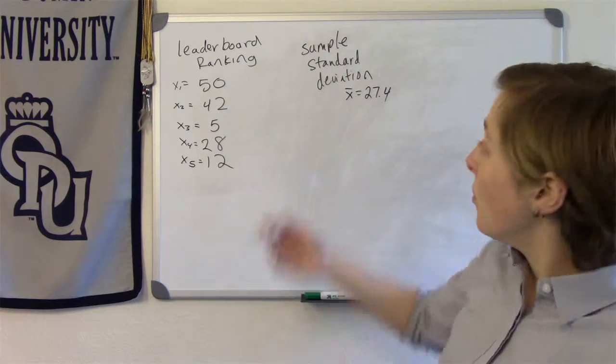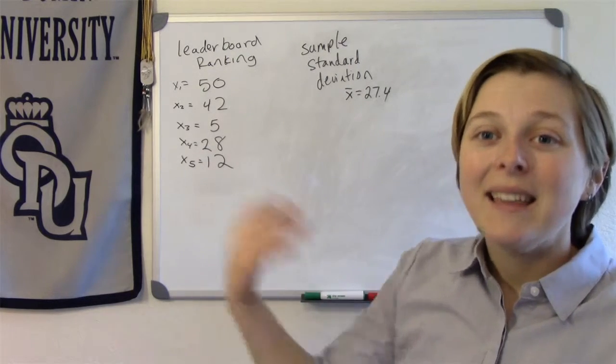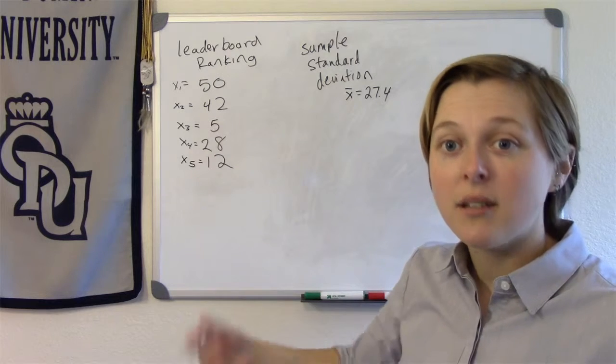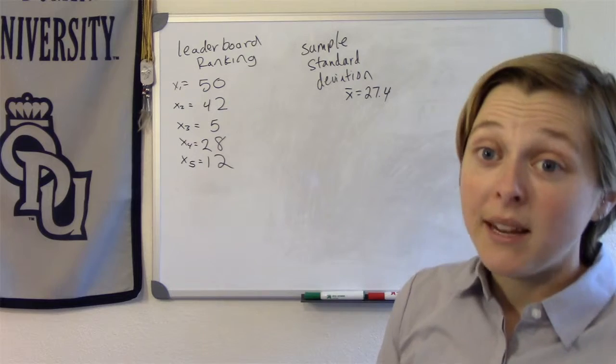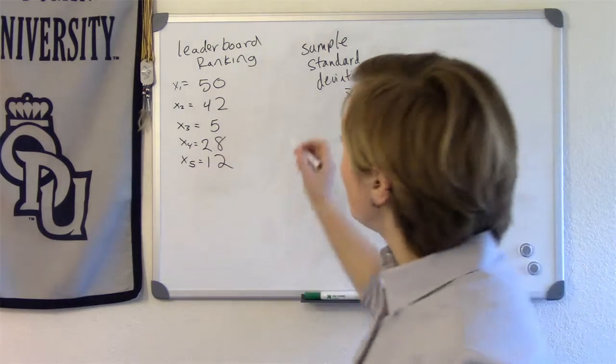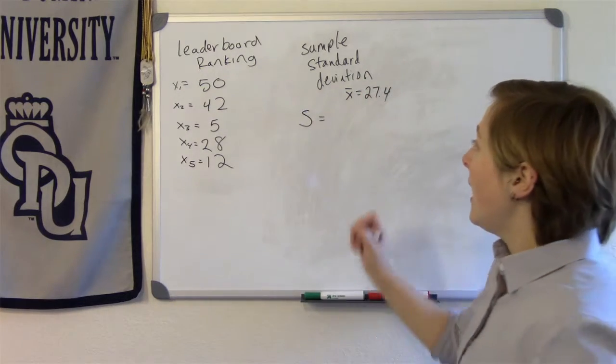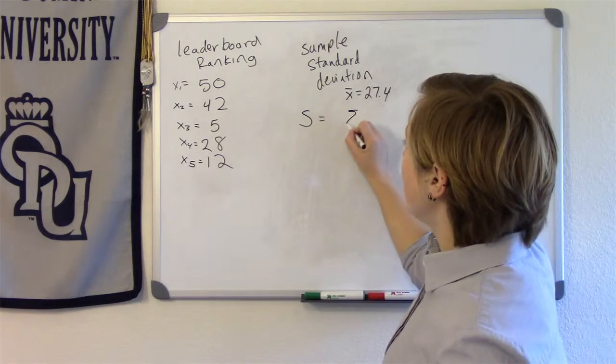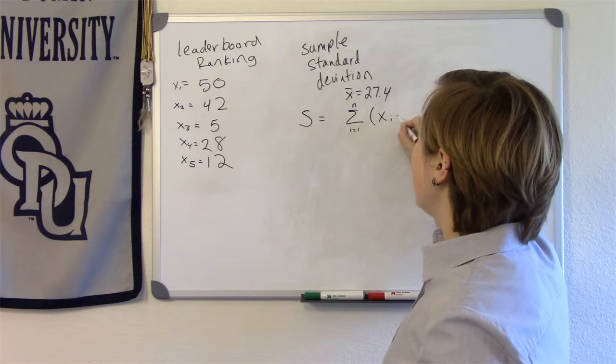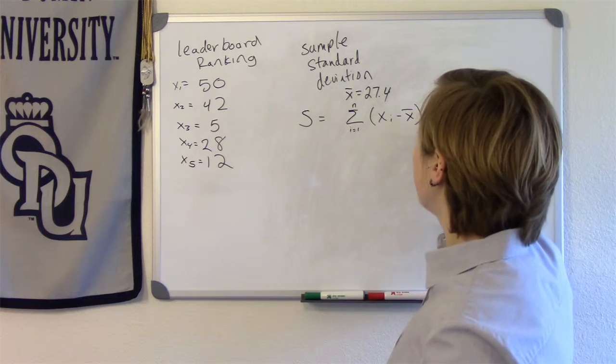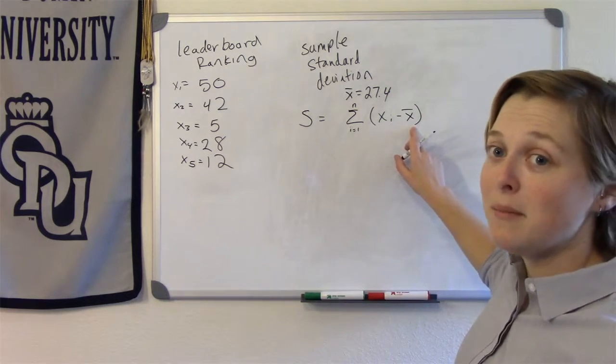Then basically what we're doing when you have the sample standard deviation, once you have all those differences from the mean, you average them. Average difference from the mean. That's what standard deviation is. Now the formula is a little more complicated than that, and let's talk about it. So formula for sample standard deviation, we use S. And so what we're going to do, we're going to sum up from i equals 1 to n, xi minus x̄. So that's the i-th observation minus the mean. That's the deviations from the mean that we just talked about.